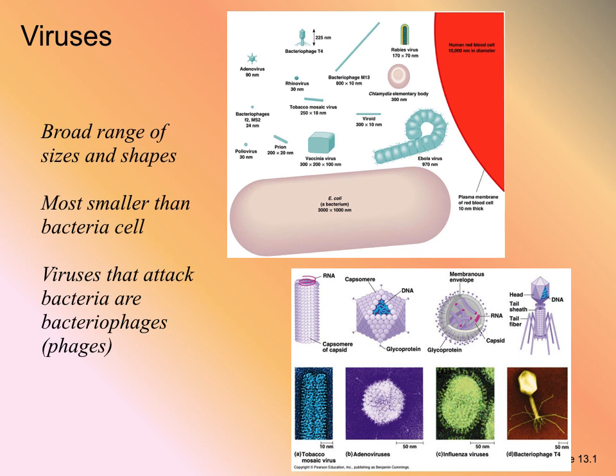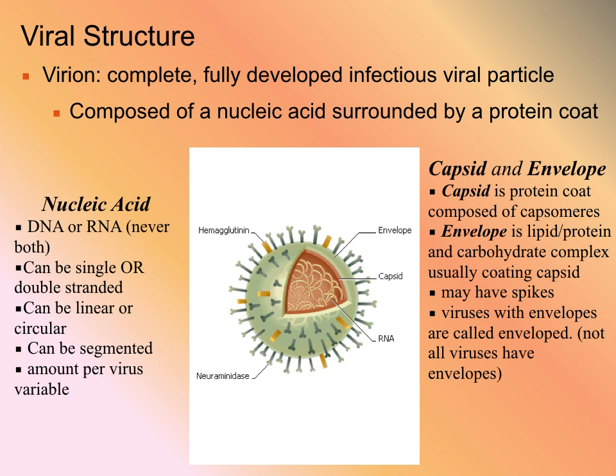Viruses come in a pretty big range of sizes and shapes. This diagram shows several viruses compared to the size of a bacterial cell versus a red blood cell. There is another class of viruses called bacteriophages — viruses that attack bacteria, referred to simply as phages. A complete, mature, ready-to-infect viral particle is called a virion.